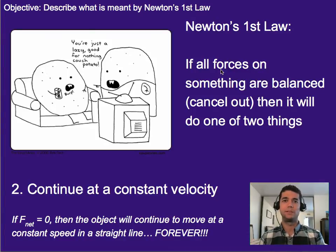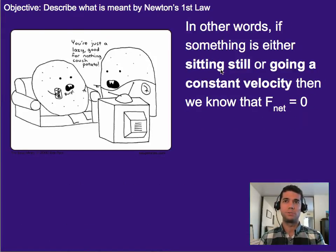Now, as it's written, we kind of think of it as if we know the net force on it is zero, then we're going to see either of these two things happen. But the real power of Newton's First Law is actually the other way around, which is if we see either of these two things happen, then we know that the net force on it must be zero. So for example, if something is sitting still or going a constant velocity, then we know the net force on it is zero.